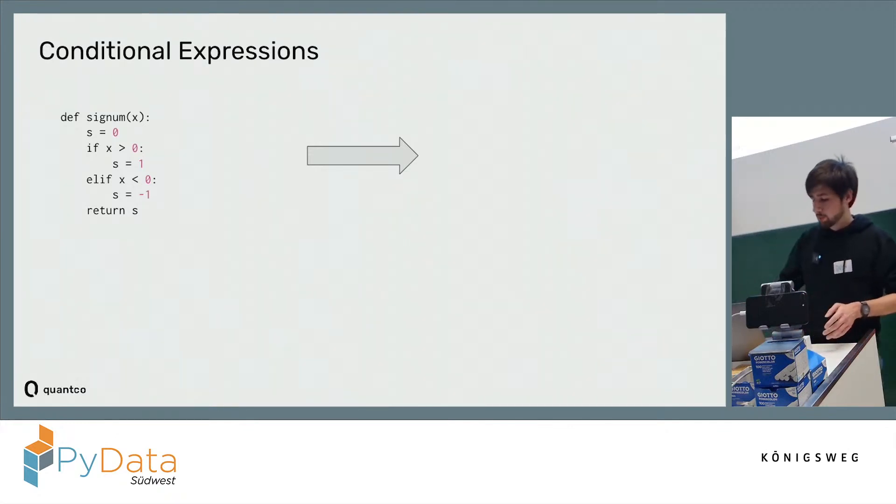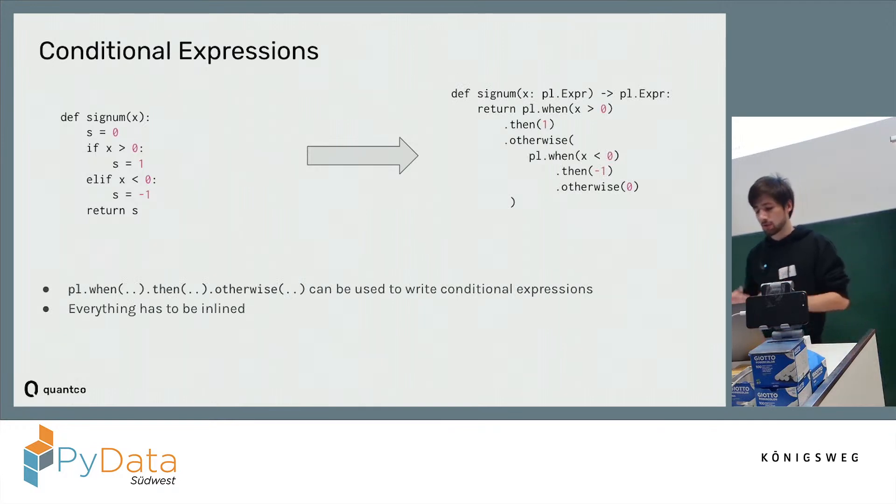The equivalent Polars code would look something like this, where we would use this Polars when then otherwise chain. As you can see, the condition goes in here, and if this is true, it should return 1, and if it's not the case, it will do a nested statement like this.